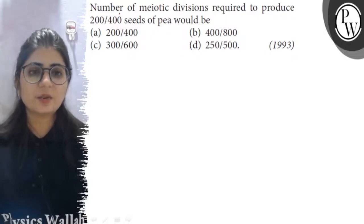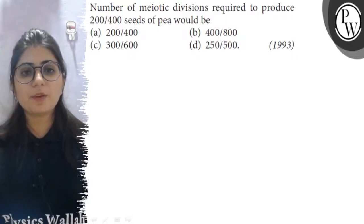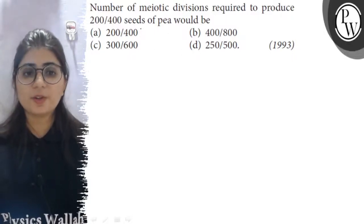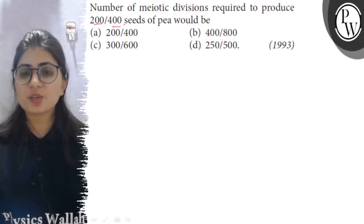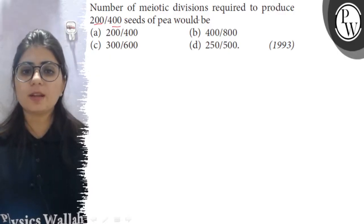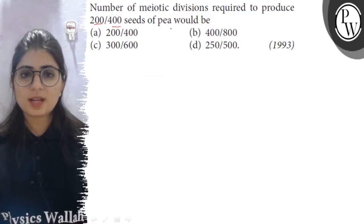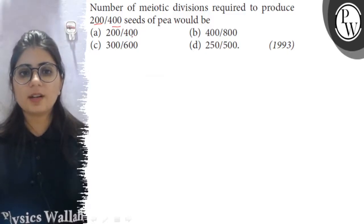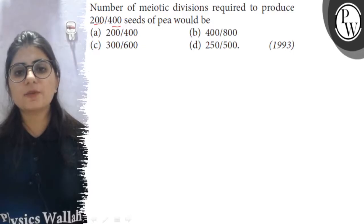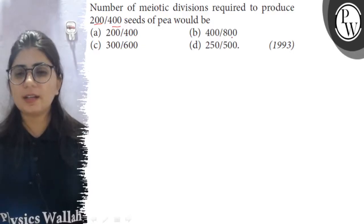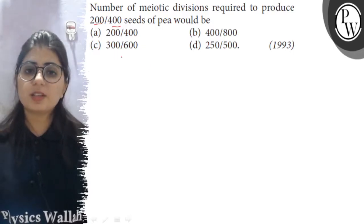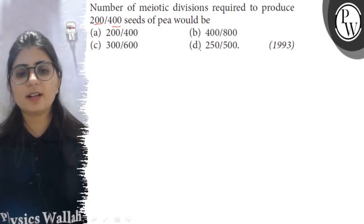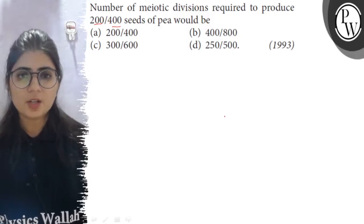Hello, let's read the question. Number of meiotic divisions required to produce 200 or 400 seeds would be — options are: A) 200 and 400, B) 400 and 800, C) 300 and 600, and D) 250 and 500.